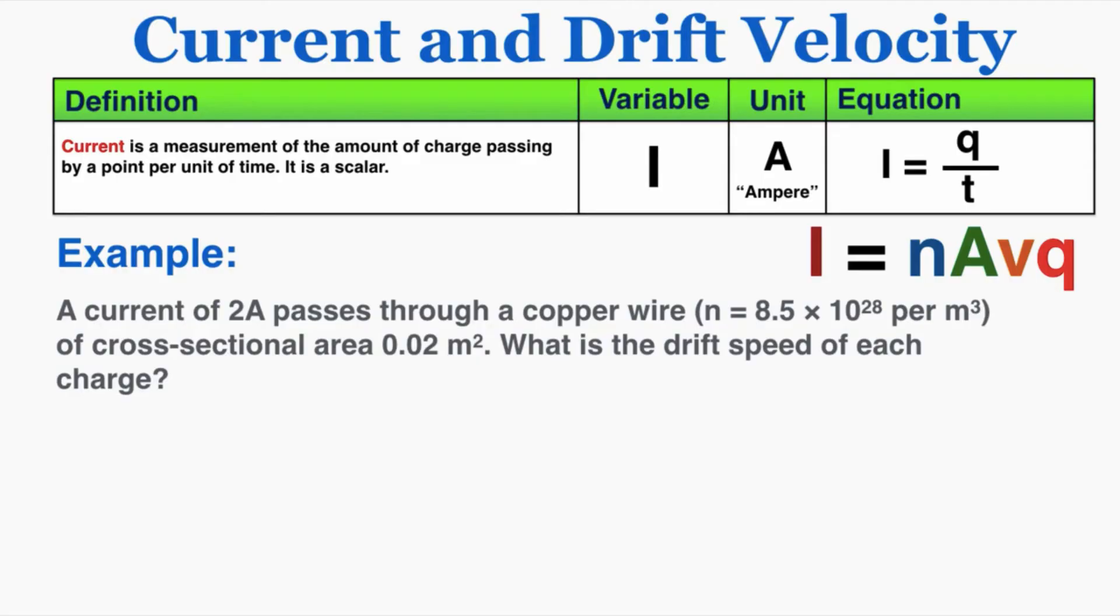As an example, this is what a typical problem with that second equation could look like. A current of 2 amps passes through a copper wire, and copper wire has 8.5 times 10 to the 28th electrons per cubic meter, a cross-sectional area of 0.02 meters squared. What is the drift speed of each charge?